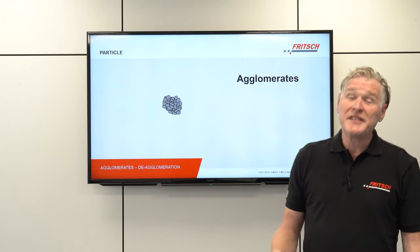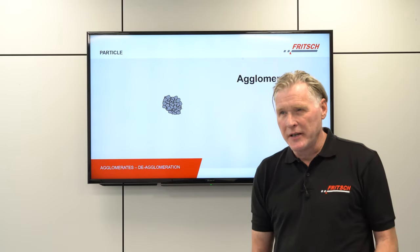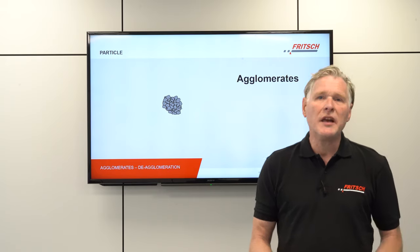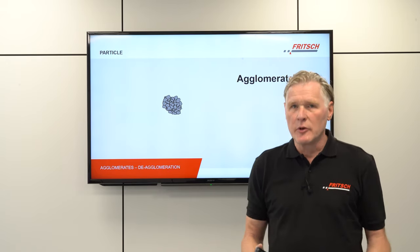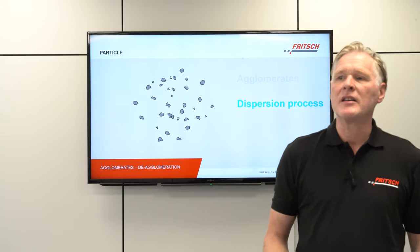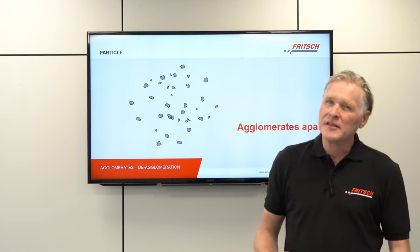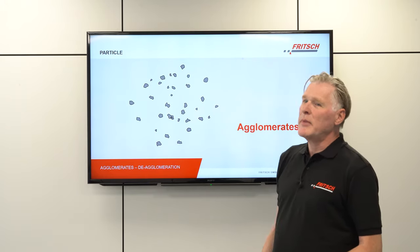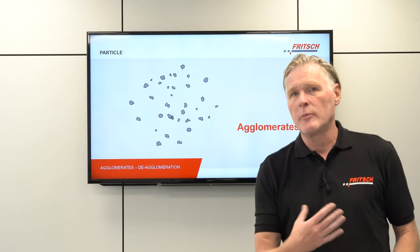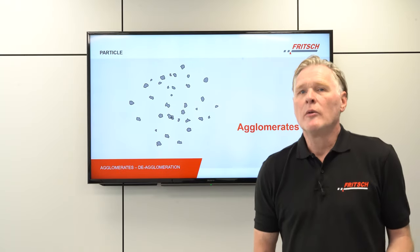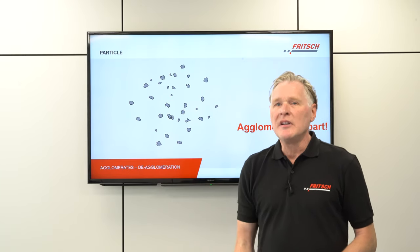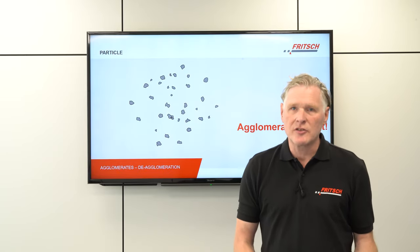In most cases particles will form agglomerates — particles stick together. In most cases you will not be interested in the size of your agglomerates but want to know the size of the separated particles, which means you need to take those agglomerates apart — what we call a dispersion process. It may happen that you cannot take the agglomerate completely apart; some fraction may remain. This is one of the main challenges for the user: to de-agglomerate and disperse the sample material in your instrument or during preparation.